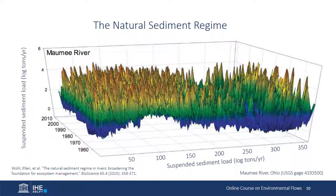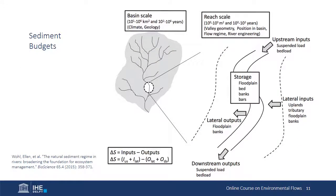Only 9 sites have sediment concentration records longer than 50 years, compared to over 33,000 USGS gauging stations with flow records longer than 10 years, but fewer than 2,000 with suspended sediment records of equivalent length. Data from the Maumee River of Ohio — one of those 9 sites — is shown with days of the year on the x-axis, years on the y-axis, and suspended sediment load on the z-axis. Assessments of regional change in sediment regimes are limited to deltas of major river basins, which in most cases have been significantly altered for more than a century. Given the rarity of sufficient knowledge of truly natural sediment regimes, Wall and colleagues recommend instead managing rivers to achieve a balanced sediment regime.